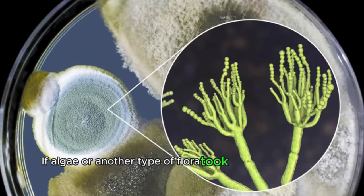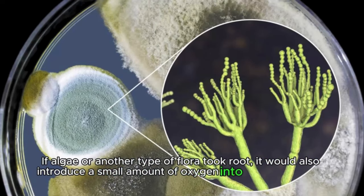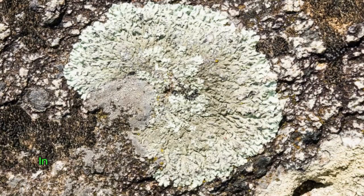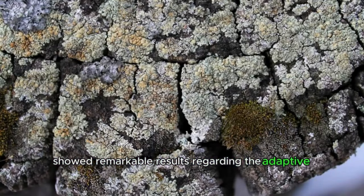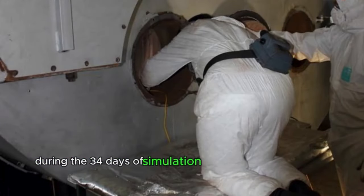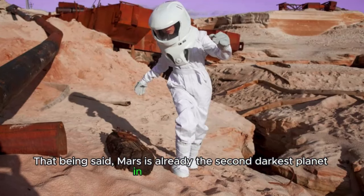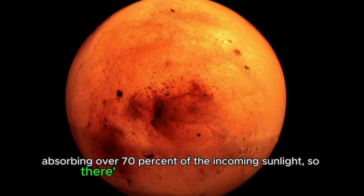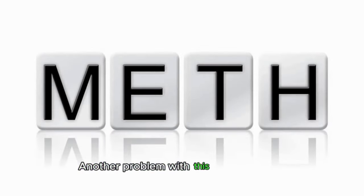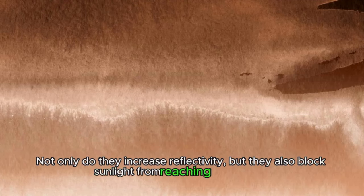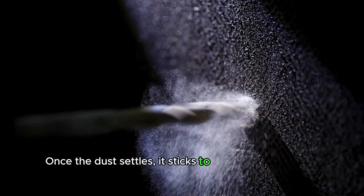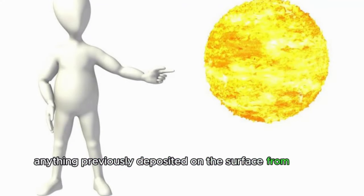In April 2012, scientists reported that the lichens survived and showed remarkable results regarding the adaptive capacity of photosynthetic activity during the 34 days of simulation under Martian conditions at the Mars simulation lab. That being said, Mars is already the second darkest planet in the solar system, absorbing over 70 percent of the incoming sunlight, so there's little scope for further dimming. Another problem with this method is the regular Martian dust storms that span across the entire planet for several weeks at a time. Not only do they increase reflectivity, but they also block sunlight from reaching the surface. Once the dust settles, it sticks to whatever it touches, effectively obscuring anything previously deposited on the surface from the sun's reach.